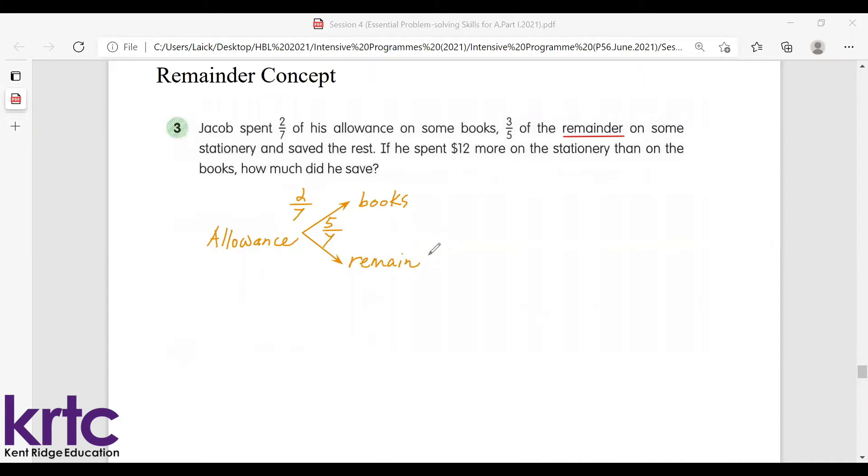This is the amount of allowance left, but out of the remainder some money will be spent on stationery. So the fraction is three-fifths, three-fifths of the remainder. Then the rest of the allowance will be saved, and that will be two-fifths.